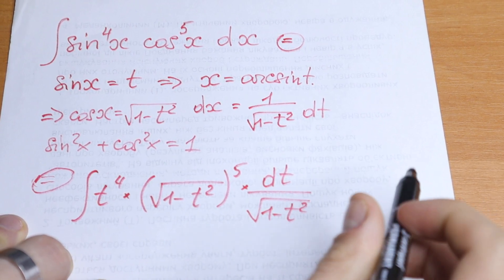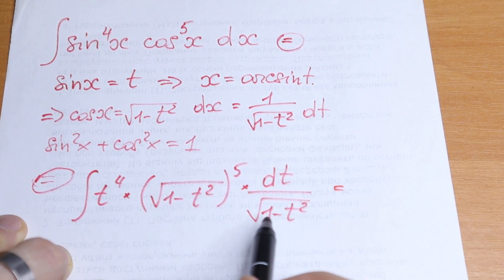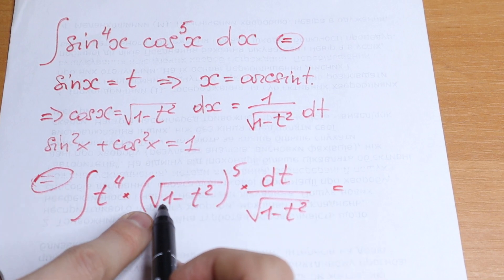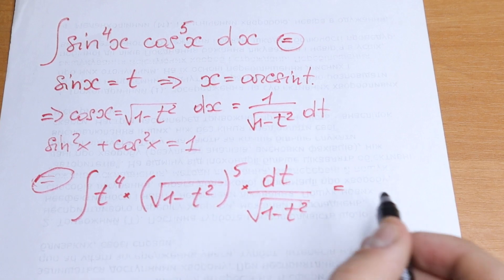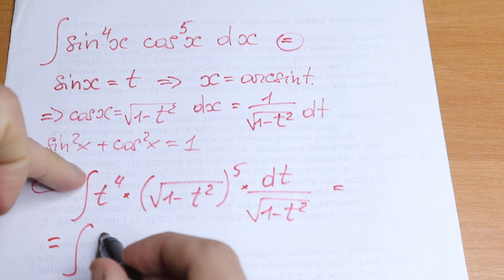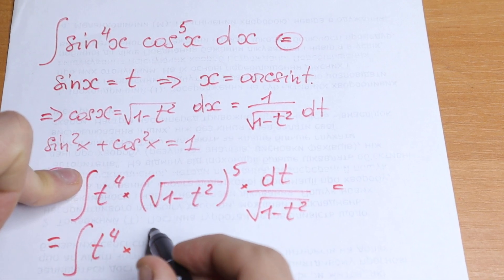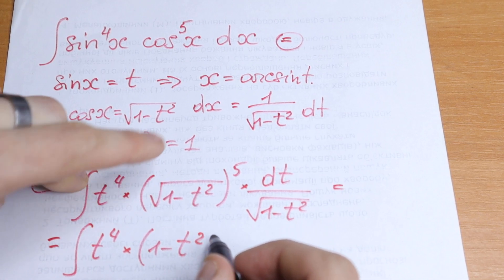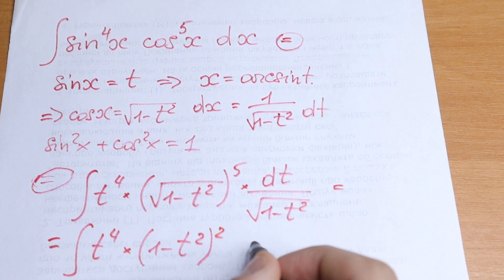We can cancel the square root of 1 minus t squared in the numerator with the denominator. Looking at what remains: we have the square root of 1 minus t squared to the fourth power. After canceling, we will have the integral of t to the fourth power times 1 minus t squared to the second power, dt.